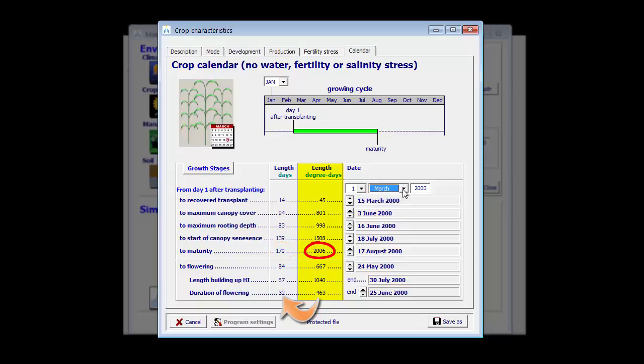The same is true if I switch to a later planting date, for example the 1st of May. Then only 131 days are required to get 2006 growing degree days. So let me put it back on the 1st of April and then I'm going to save my calibrated file.